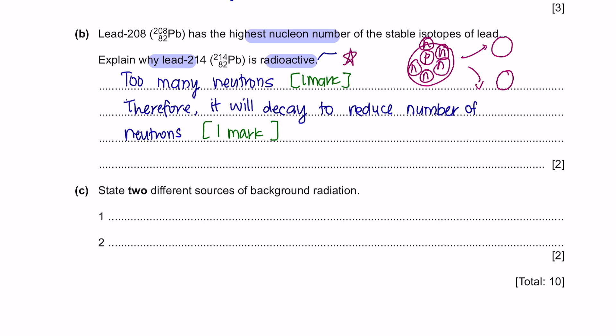Question C. State two different sources of background radiation. There are many answers for this, and you can choose two.